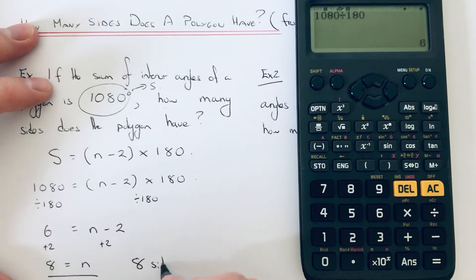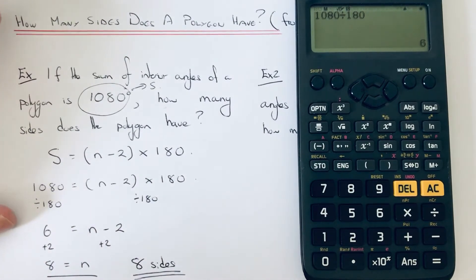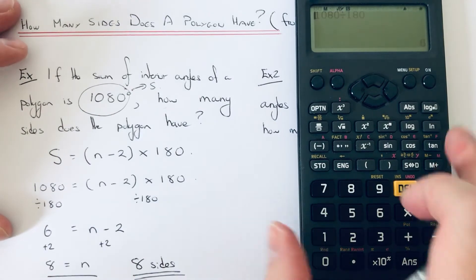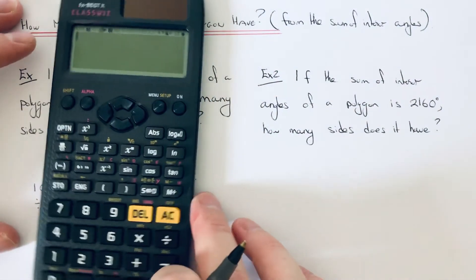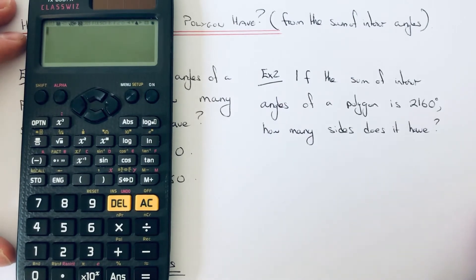Our polygon has 8 sides, so that would mean it's an octagon. Let's have a look at the second example. If the sum of interior angles of a polygon is 2160, how many sides does it have?